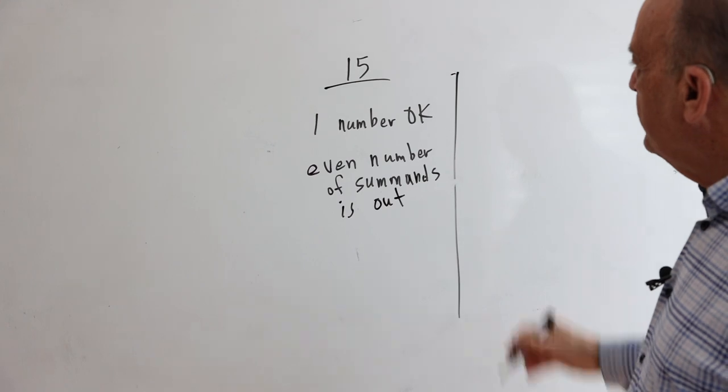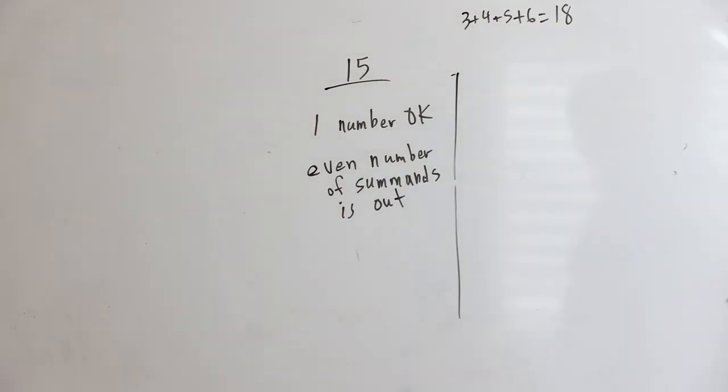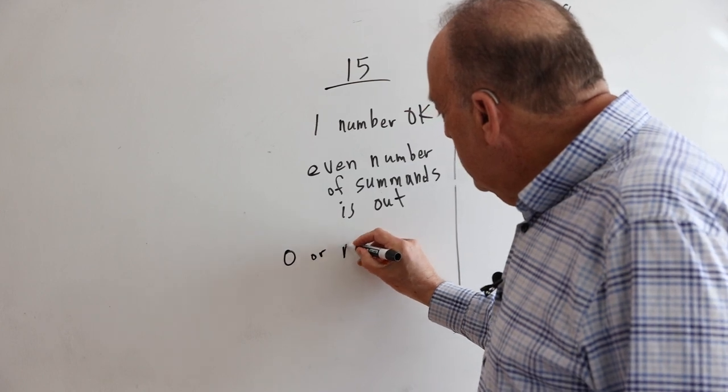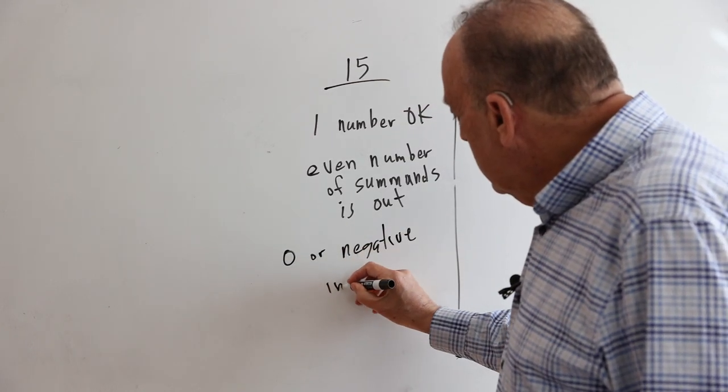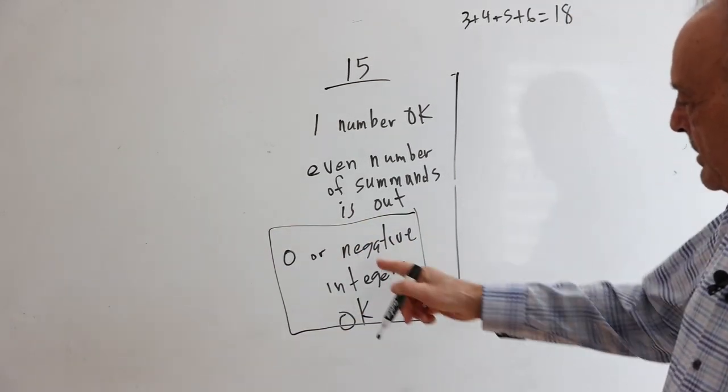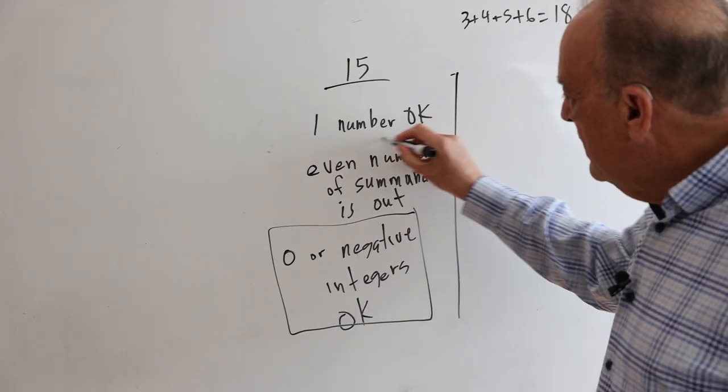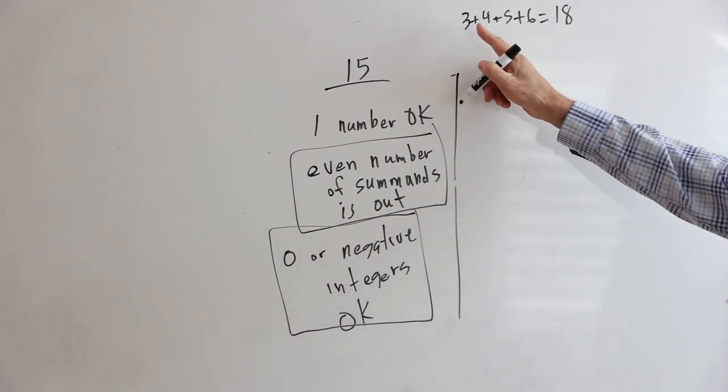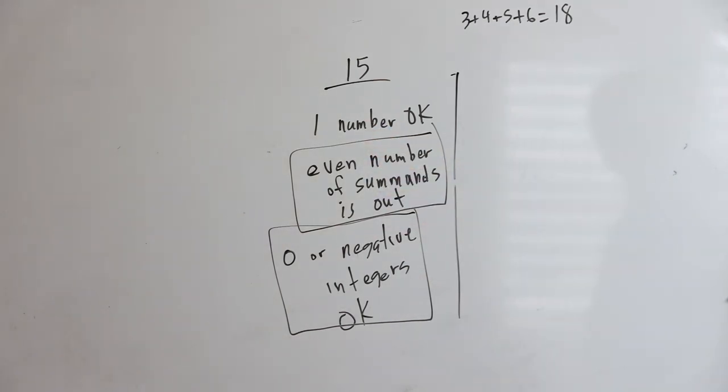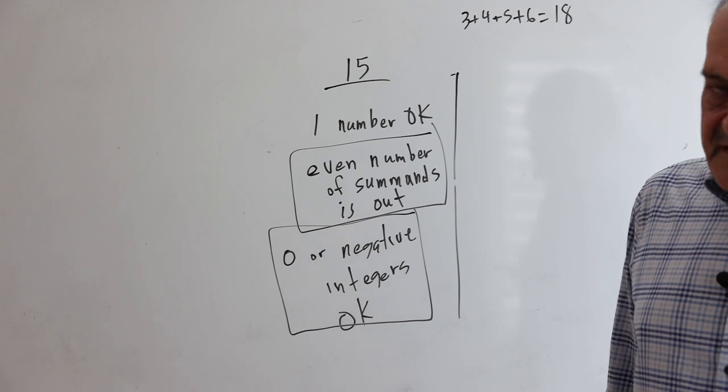An even number of summands is out. Remember when we did 18, I believe we did 3, 4, 5, plus 6 is 18. That's out. Temporarily, we're not going to allow this, but we are going to allow negative integers and zero. So zero or negative integers, they're okay. We're broadening the thing. You can use negative integers, you can use zero, but you can't have an even number of summands. When you add up your numbers, you have to have an odd number of numbers that you're adding. You can just say one number is okay, because after all, one is an odd number.